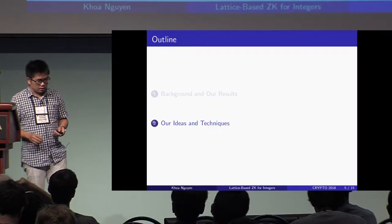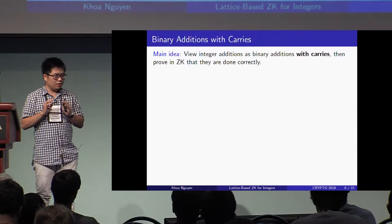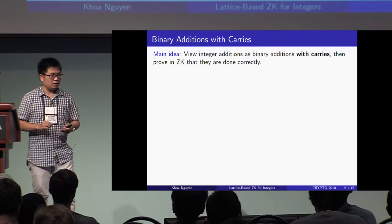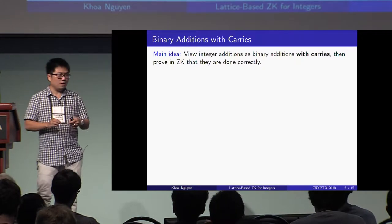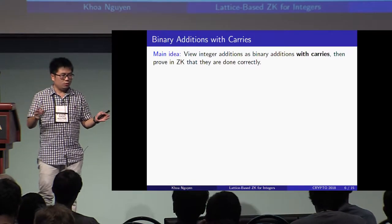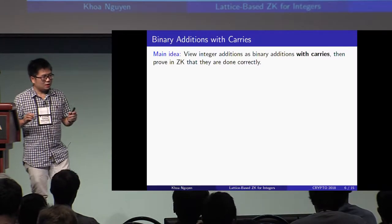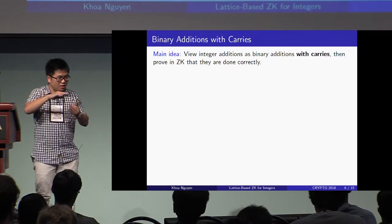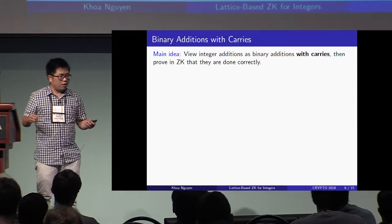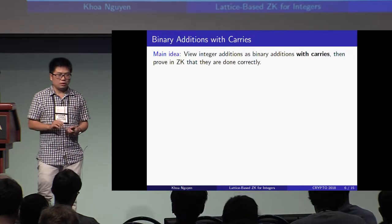Let me now discuss our ideas and techniques. Our main idea is to view integer addition as binary addition with carries, and then prove in zero knowledge that the operations are done correctly. By working with binary strings, we can work with a small modulus and a very weak assumption. However, proving that the binary additions with carries are done correctly is not straightforward at all. In fact, to the best of our knowledge, this approach, while quite natural, has never been considered in the context of zero knowledge previously.